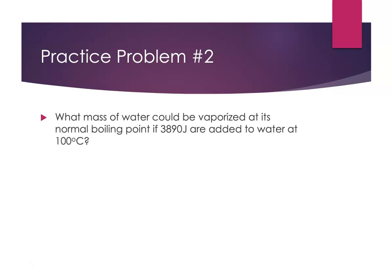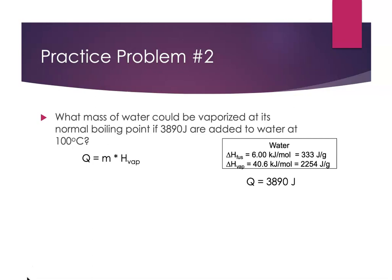Let's do another problem. What mass of water could be vaporized at its normal boiling point if 3,890 joules are added to water at 100 degrees Celsius? So we already have very hot water, and now we want to vaporize it. We're going to use the equation Q equals the mass times the heat of vaporization. Again, we know the heat of fusion and the heat of vaporization for water. And we know that the Q value here is 3,890 joules.